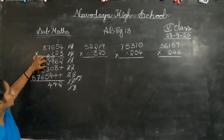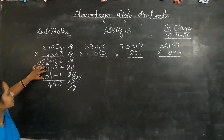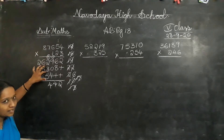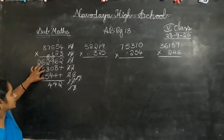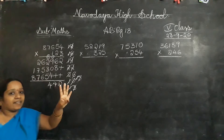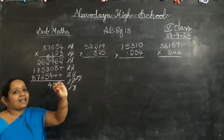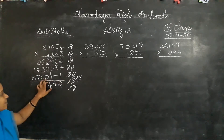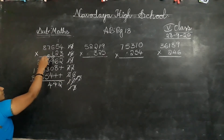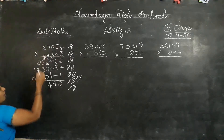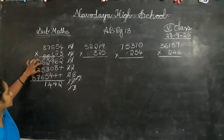Next. 2 plus 1 is 3. 3 plus 3 is 6. 6 plus 5? 11. 1 is carry forward.